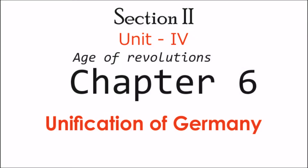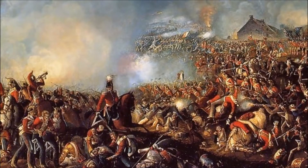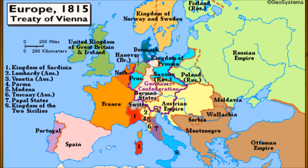Unit 4 Chapter 6: Unification of Germany. After the defeat of Napoleon in the Battle of Waterloo, the map of Europe was redrawn at the Congress of Vienna in 1815.